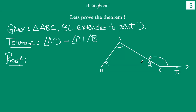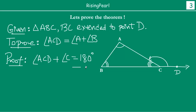Now, BCD is a straight line. There is a ray CA standing on the straight line. This means that angle ACD plus angle ACB is equal to 180 degrees, from our linear pair axiom, because BCD is a straight line and CA is a ray standing on it. So the sum of these two linear angles equals 180 degrees. This is condition 1.